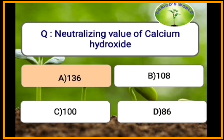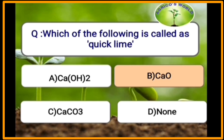The neutralizing value of calcium hydroxide is 136. CaO is called quick lime or burnt lime. Ca(OH)₂ is called calcium hydroxide, also known as slag lime or hydrated lime.